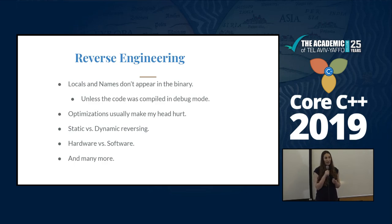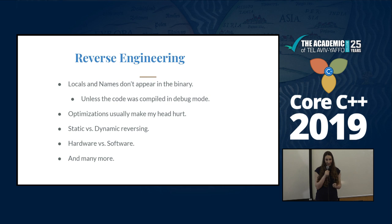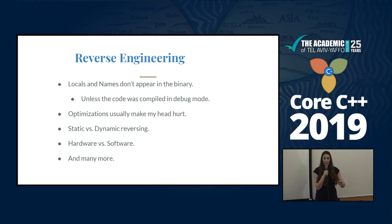There are also two types of reversing. You can do static reversing, where you take the binary and understand what happens there. And you also have dynamic reversing, where you take the code, run it, and see what happens in the assembly. We don't have the code itself, just the binary, so we can only see what the processor does in real time.